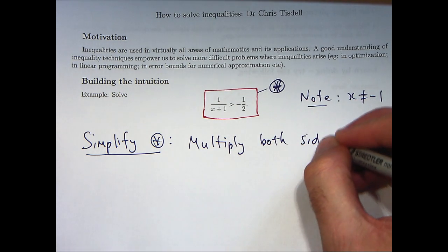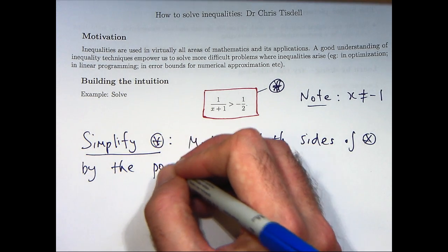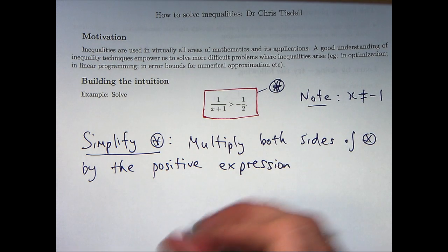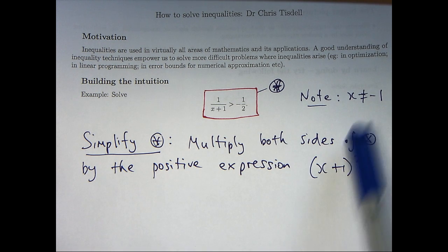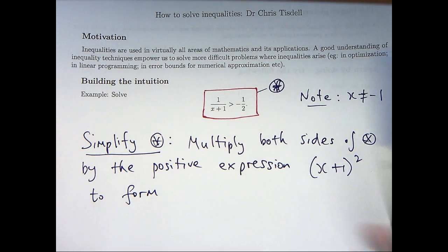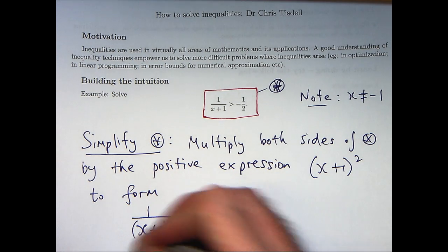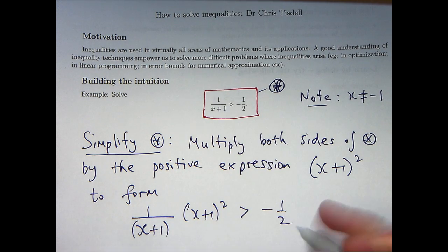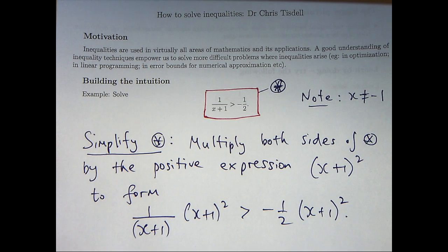So, we're going to multiply both sides of star by the positive expression (x plus 1) squared. Now, notice x is not equal to minus 1 so this is always positive. So, if we make that choice I'm going to cancel out the x plus 1 on the bottom. So, things are going to simplify, hopefully, and I can keep the same inequality sign because I'm multiplying both sides by a positive value or positive expression.